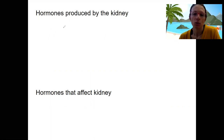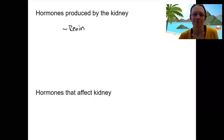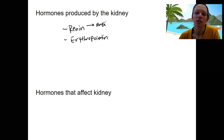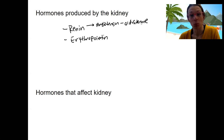Produced by the kidney, we've talked about renin, which triggers angiotensin. Renin is part of the renin-angiotensin-aldosterone system, triggered by low blood pressure, and now you know what aldosterone is going to do. Remember, angiotensin also causes vasoconstriction.